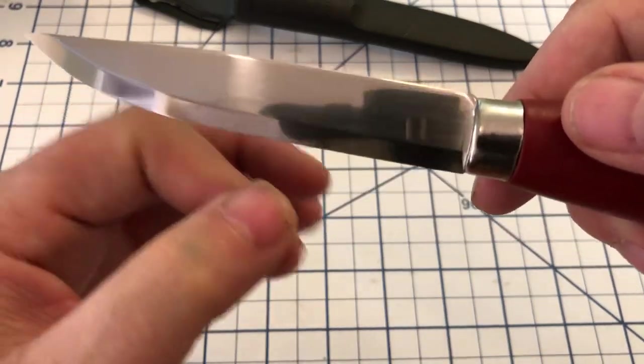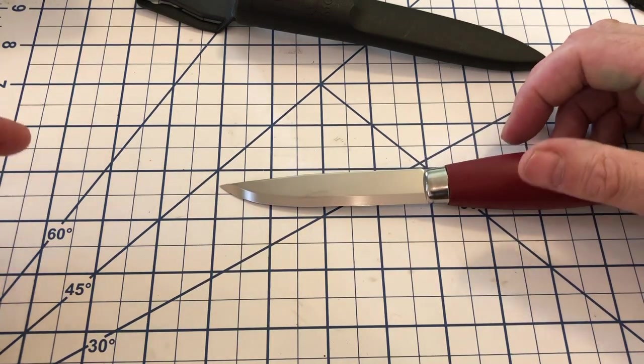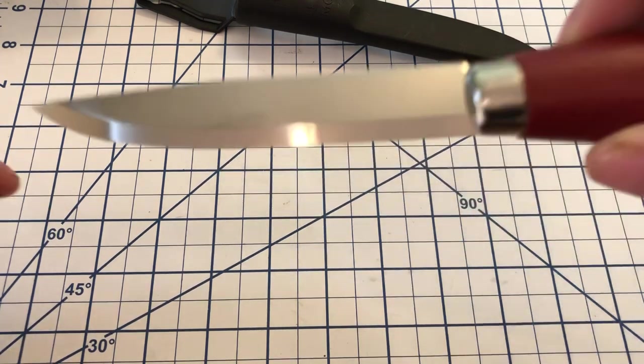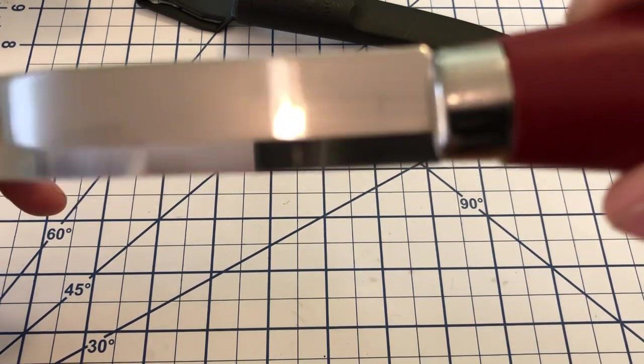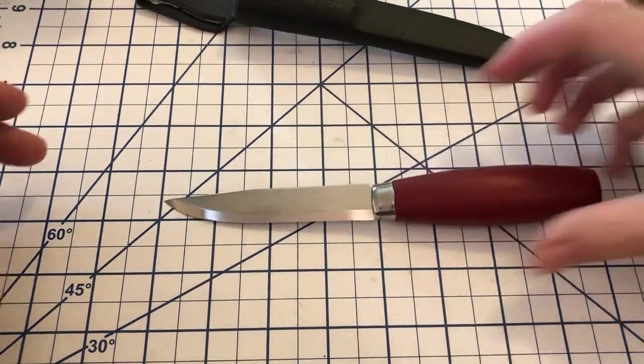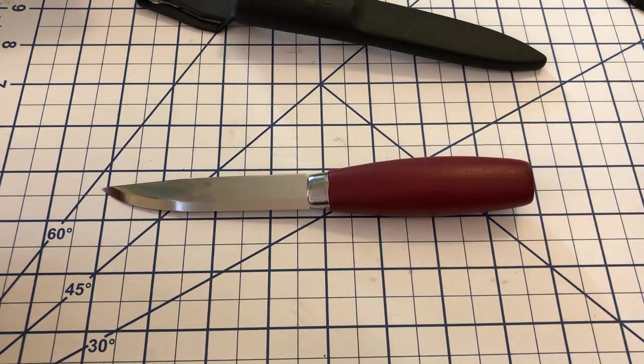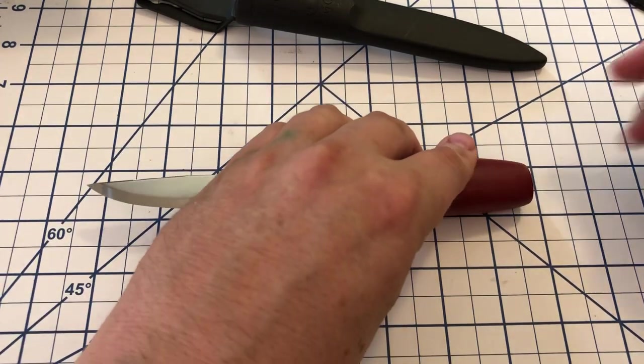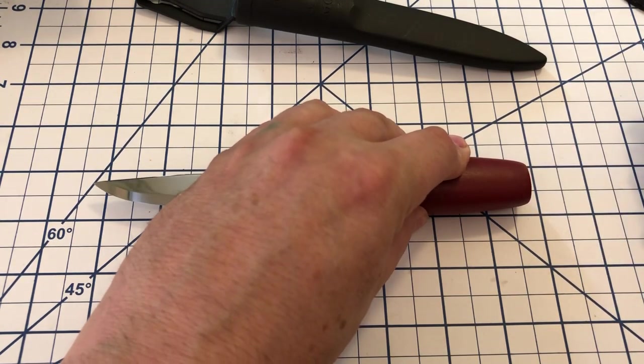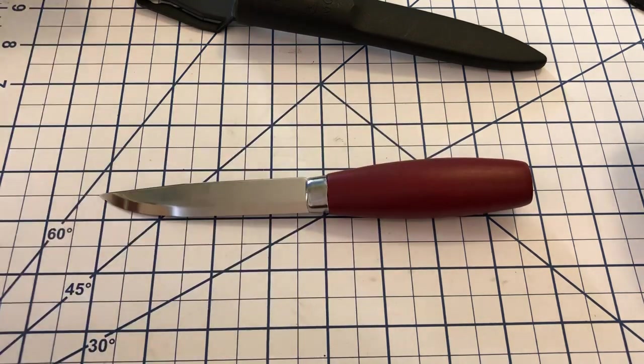On the number one, classic number one, you have a just under a four-inch blade, and you can see there is no ricasso and no choil, so that is all cutting edge. The total length on this knife is going to be right around, it's at an angle you can't really see where it ends up, but it's about seven and three-quarters of an inch.